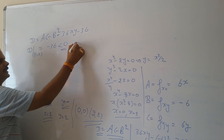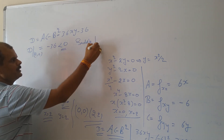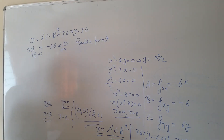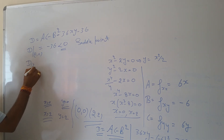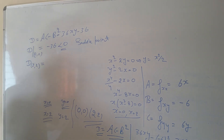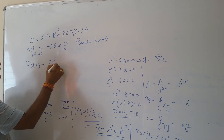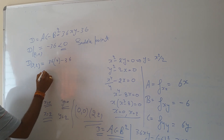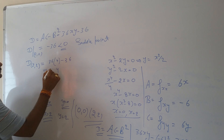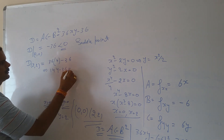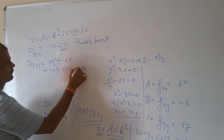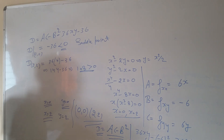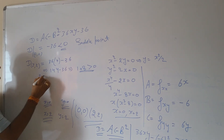At the point (2, 2): D = 36(2)(2) minus 36 = 144 minus 36 = 108, which is positive. So D is positive at (2, 2), meaning (2, 2) is an extrema point.